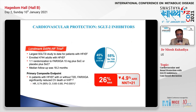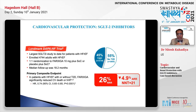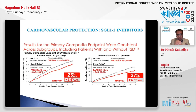The landmark DAPA-HF trial included patients receiving Farxiga with heart failure with reduced ejection fraction. 45% of these patients had diabetes, and 55% did not. In the overall population of the DAPA-HF trial, there is a 26% reduction in CV death or hospitalization for heart failure on top of standard of care treatment. The benefit was almost identical whether patients had diabetes or not.